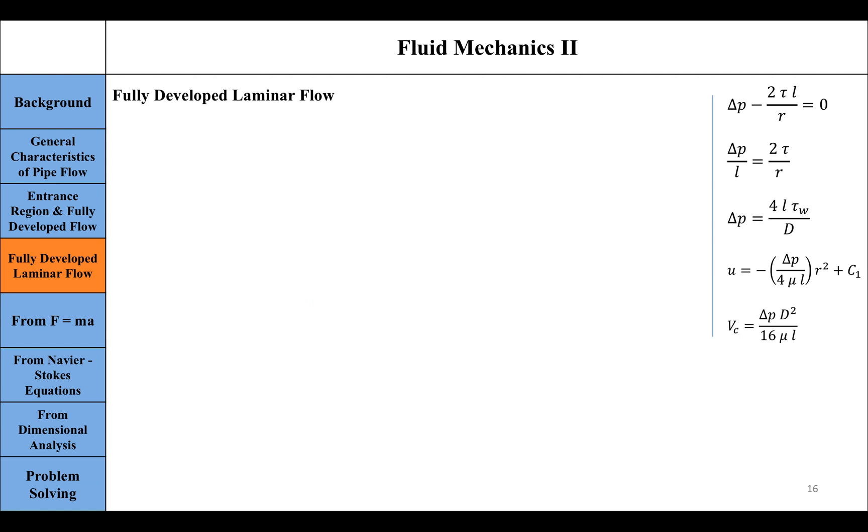Now we can use this velocity profile information to find the volume flow rate through the pipe cross-section. We can do that in terms of velocity multiplied by area, integrating it over the entire pipe cross-section.